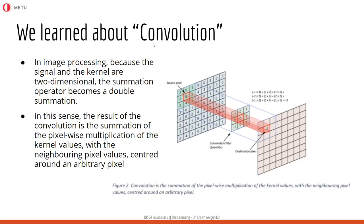At some point we were ready to delve into deep learning, and at that point we knew how to train neural networks, how to treat them as computational graphs, what is gradient descent, what is the loss function, the score function, and how to apply gradient descent to a computational graph like a neural network — which we call the backpropagation algorithm. With this knowledge we started talking about convolution and convolutional layers.